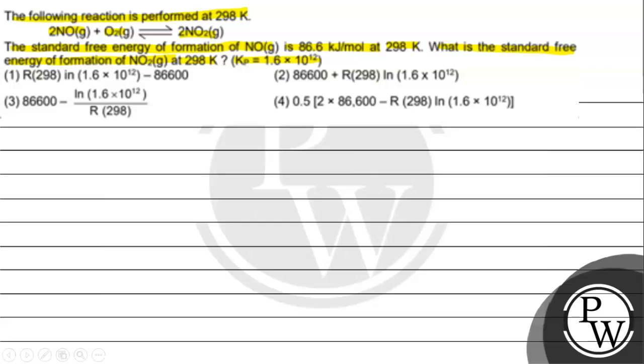We need to find the standard free energy of formation of NO₂. We are given that NO has a standard free energy of formation, and we have Kp.